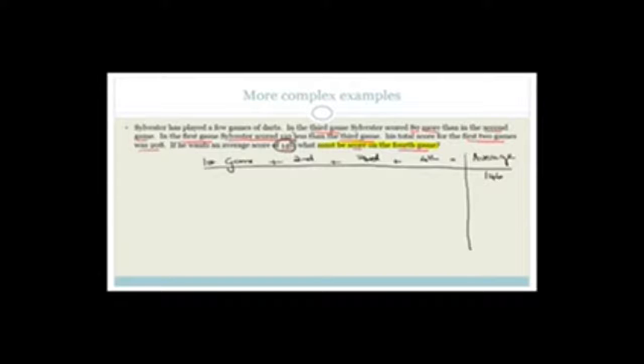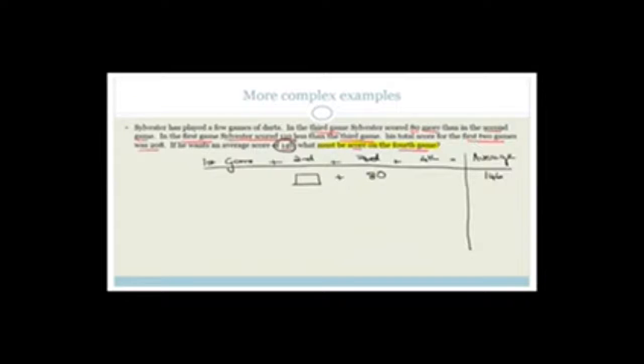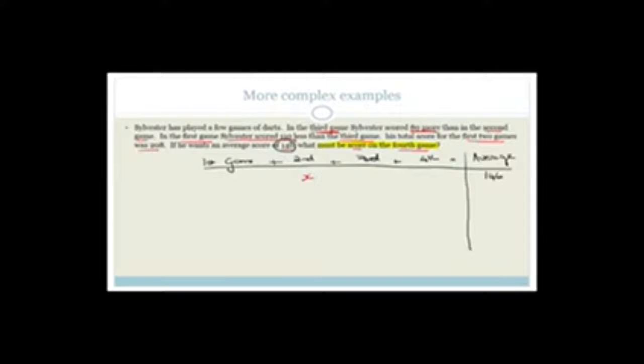Now let's see. It says the third game Sylvester scored 80 more than in the second game. So in other words, this is the second game. In the third game, he scored 80 more. In the first game, he scored 110 less than the third game. And the first two scores, the first two games was 208. So let's let something be X. Let's let the second game be X. Do you agree that in the third game, the third game is 80 more than the second game? I'm letting X be the second game.